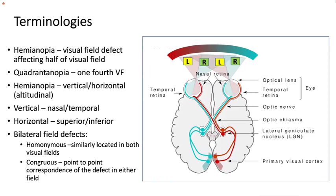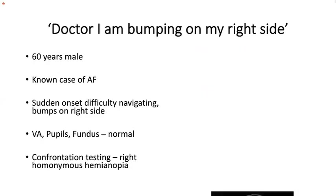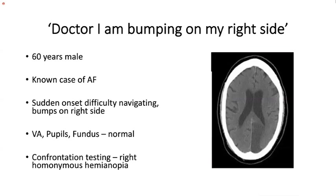Reviewing terminology: hemianopia affects half the visual field; quadrantanopia affects one-fourth. Hemianopia may be vertical or horizontal — when horizontal, we use the term 'altitudinal.' If field defects are bilateral and similarly located in both visual fields, we call them 'homonymous.' The term 'congruous' means point-to-point correspondence of the defect in either field. As expected, this patient is found to have a left occipital infarct.